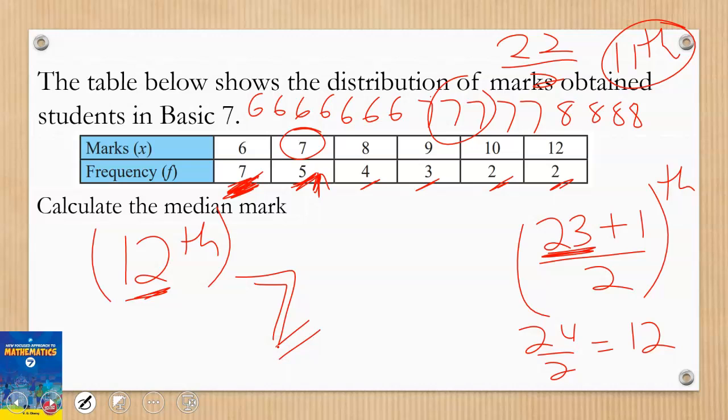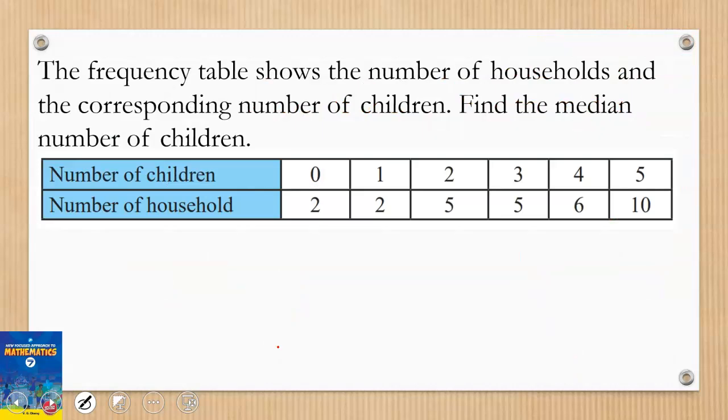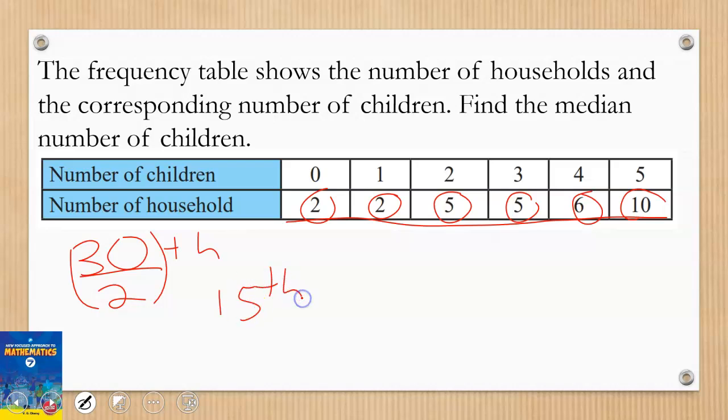Let's take another example and see. Here we have: the frequency shows the number of households and the corresponding number of children that they have. We want to find the median number of children. Again, this is my frequency, so I'm going to total the frequency: 10 plus 6 is 16, plus 5 will give me 21, plus 5 will give me 26, 28, 30. So my total mark is 30, and 30 is an even number, so I just divide by 2 and that will give me my position. That is going to be the 15th position.